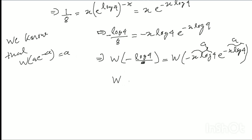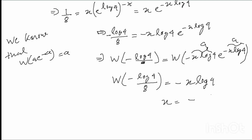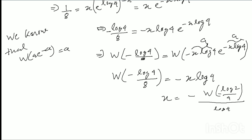So applying the Lambert W function: W(log 4 divided by 8) equals minus x log 4. Therefore, x equals minus W(log 4 divided by 8) divided by log 4. This is the answer.